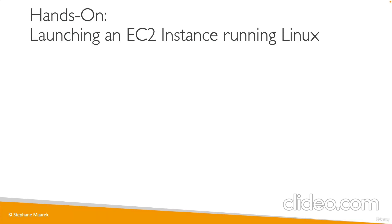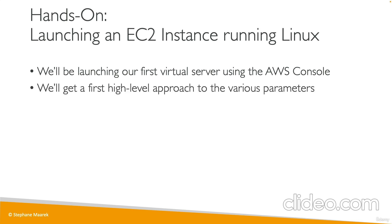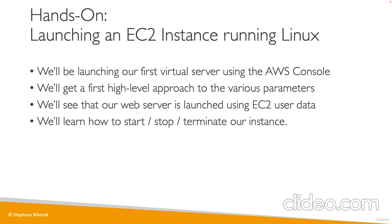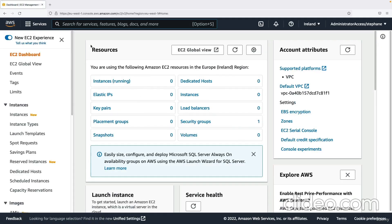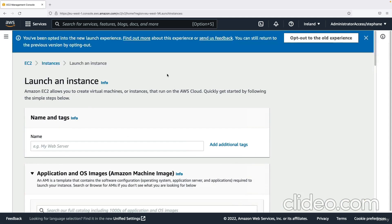In this lecture, we are going to launch our first EC2 instance running Amazon Linux. We'll be launching a virtual server using the console, getting a high-level approach to all the various parameters, and learning the most important ones. We'll launch a web server directly on the EC2 instance using the user data, and learn how to start, stop, and terminate our instance. Let's get started — I'm going to go into the EC2 console, click on Instances, and then click on Launch Instances.